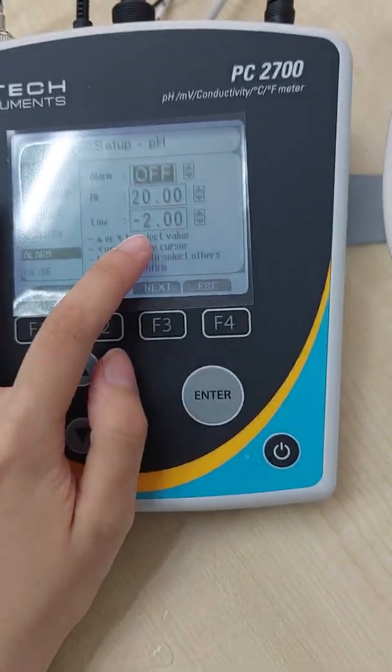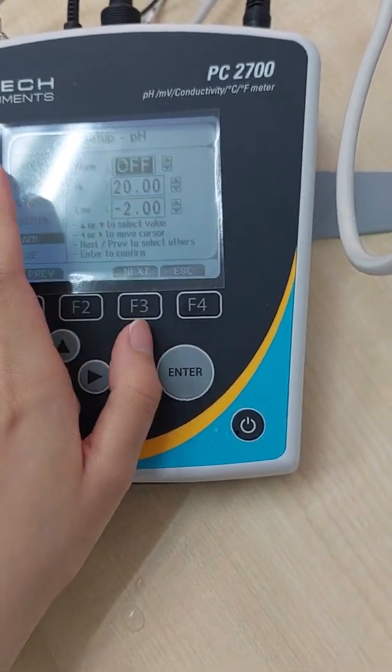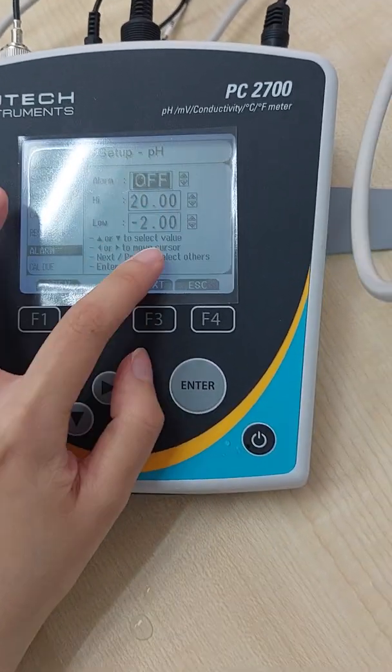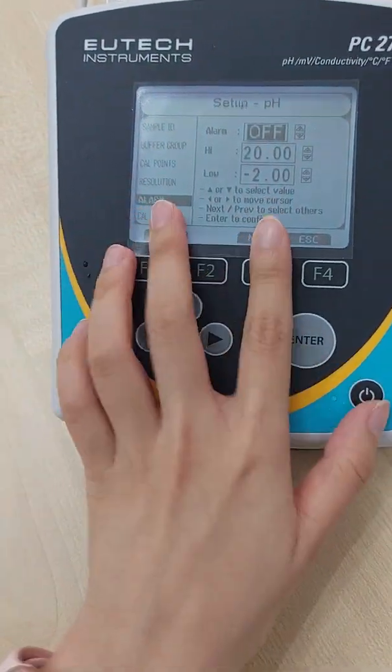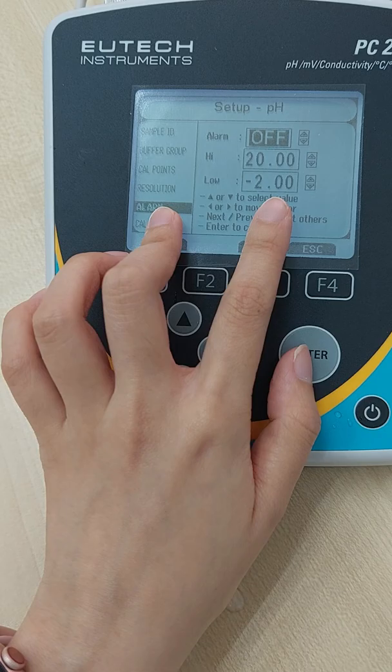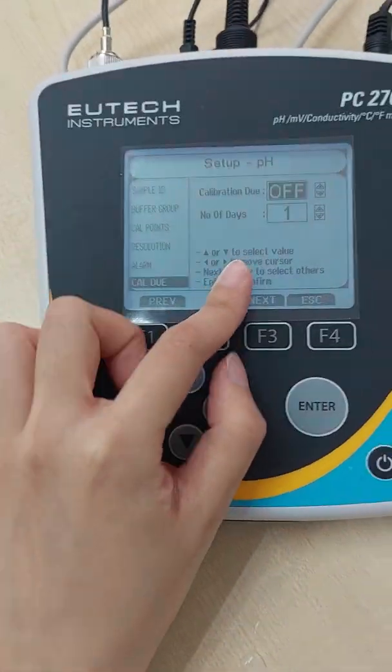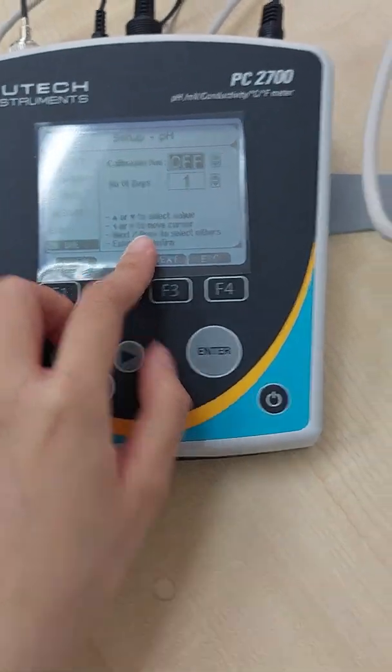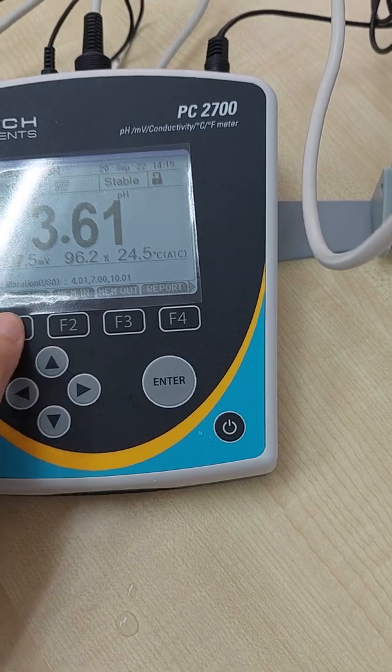Alarm, you can set your range. Let's say your acceptable range is pH 10 and also pH 5. So if your measurement is out of this range, it will have an alarm to remind you. Cal due is just a calibration reminder for you.